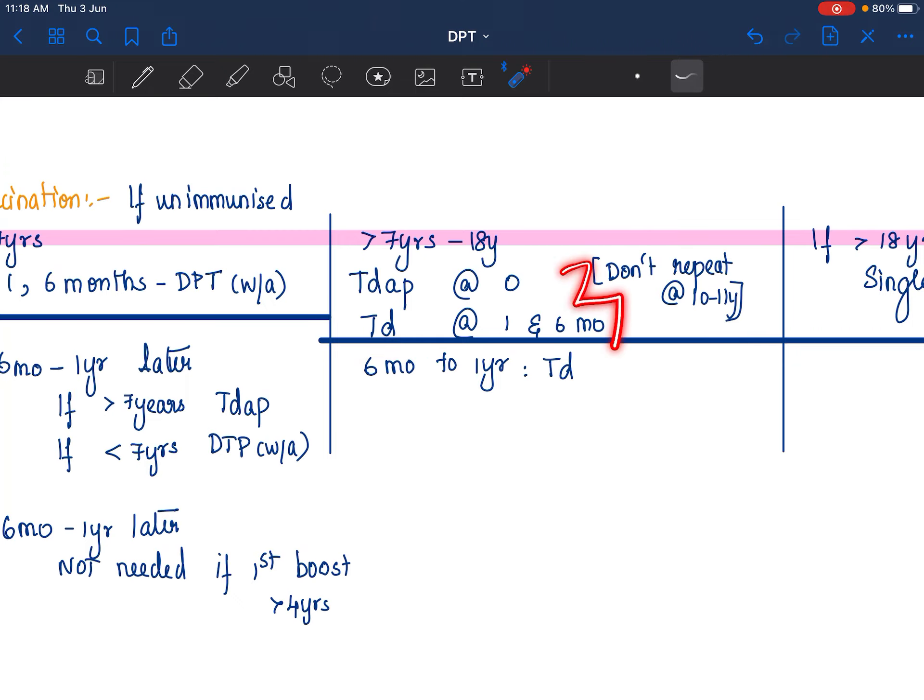This will constitute your primary vaccination. So, in 0, 1 and 6 months, the only difference is Tdap and TD is what you are giving.